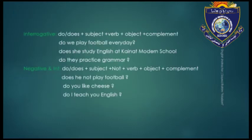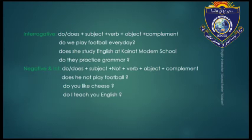Interrogative: do/does + subject + verb + object + complement. For example: do we play football every day? Does he study English at Kainaut Modern School? Do they practice grammar? In negative interrogative, we put do/does at the beginning of the sentence, then subject, then 'not,' then the verb. For example: does he not play football? Do you like chess? Do I teach you English? This is the negative interrogative form of simple present tense.